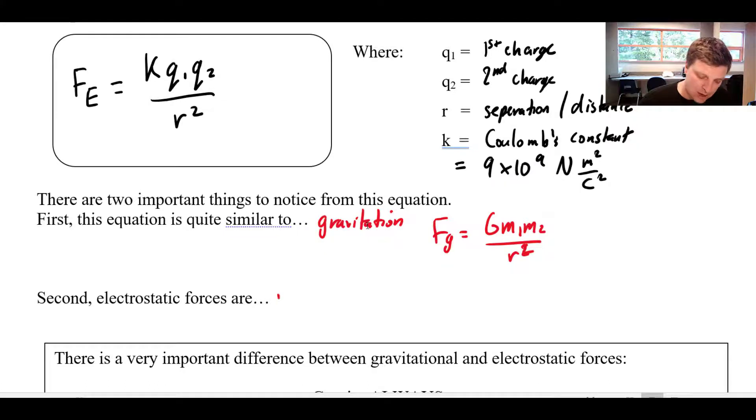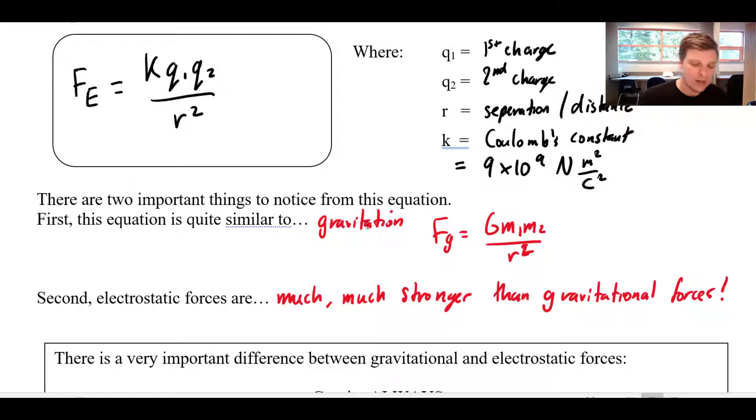But the second thing to notice is that electrostatic forces are much, much, much stronger than gravitational ones. How can I tell that? Well, one way is to consider these constants that we're involved with. This g value is 6.67 times 10 to the negative 11 Newton meters squared per kilogram squared. And Coulomb's constant is nine times 10 to the positive nine. That's like over a hundred billion, billion times bigger. What that really means is that while it takes a large planet with a lot of mass to keep us stuck to it, relatively small charges can create an equal amount of force. When we talk about charges, we're not going to talk about them on the scale of Coulombs. They might be on the scale of millicoulombs or even microcoulombs. Really small amounts of charge are going to generate large amounts of force.